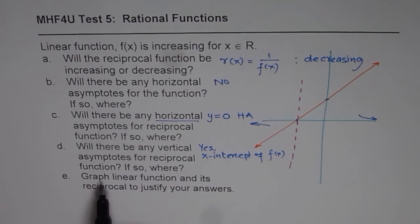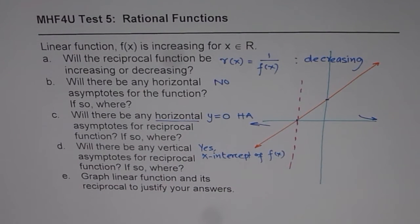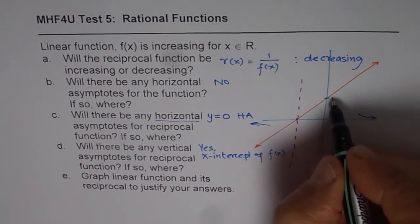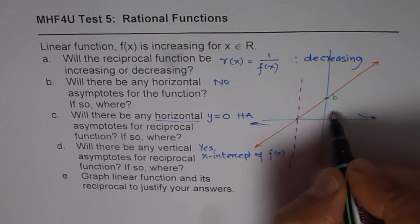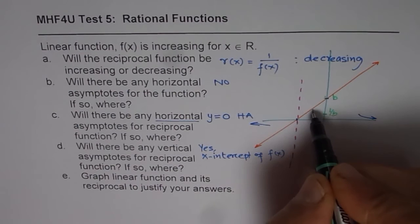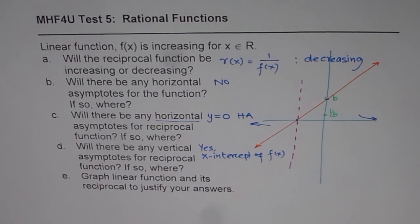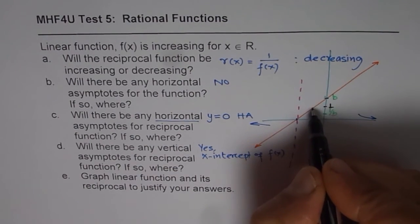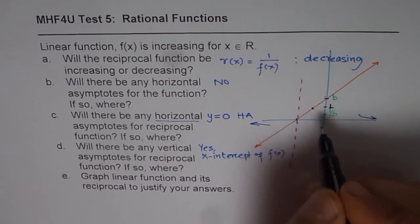The last question: graph the linear function and its reciprocal to justify your answers. We have already drawn the vertical asymptote corresponding to the x-intercept of the function. Now we sketch the reciprocal function. Let's say a value on the function is p — the reciprocal of p is 1/p, so this point translates to 1/p. If the value is 1, we get a point here which is called an invariant point.